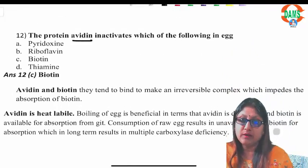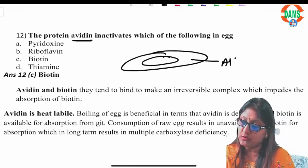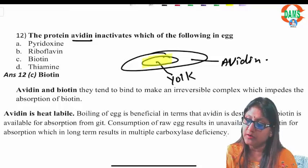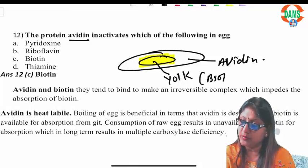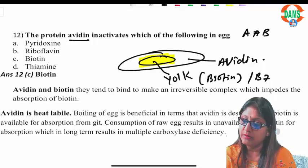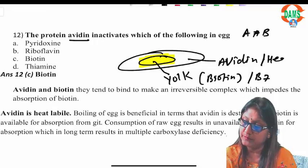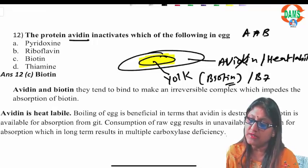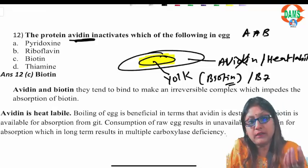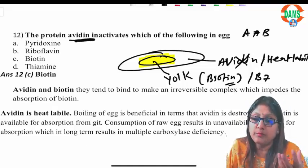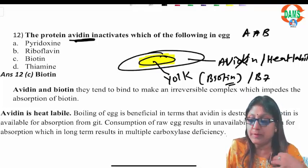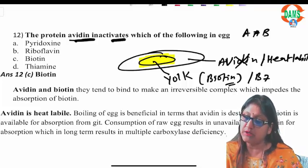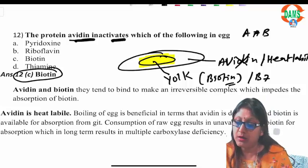Question twelve: the protein avidin is going to inactivate what in the egg? The egg outer albumin contains avidin, and the inner yolk contains rich amounts of biotin (vitamin B7). Avidin has a very high binding tendency with biotin, so they tightly bind with each other. Avidin is heat-labile — when you boil the egg, avidin is denatured and biotin is available for absorption. In a raw egg, avidin binds biotin, forming a complex that prevents biotin absorption from the GIT lumen, leading to biotin deficiency with chronic raw egg consumption. The answer is biotin — avidin binds and inactivates biotin.